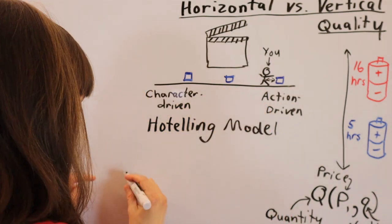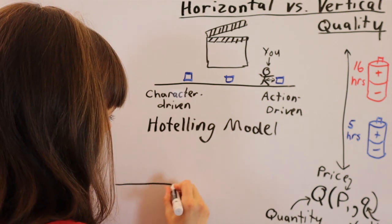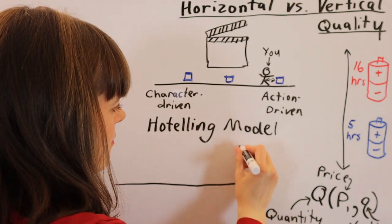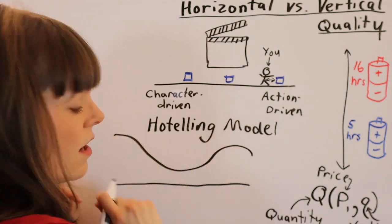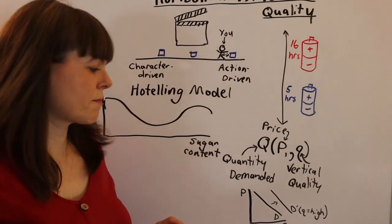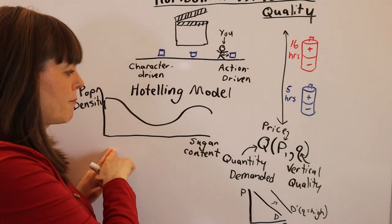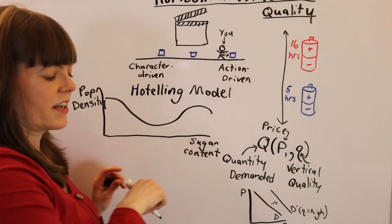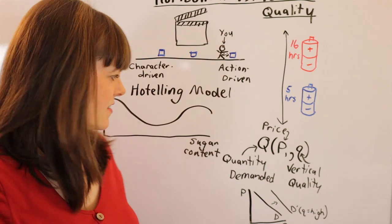We could think about this in a more careful way by thinking about the density of population across some spectrum. We might imagine bottled tea companies competing, each with a different level of sugar content.